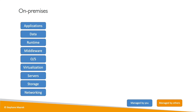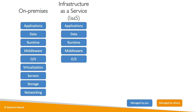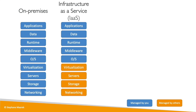With IaaS — Infrastructure as a Service — we're going to manage the application, the data, the runtime, the middleware, and the OS. But all the virtualization, servers, storage, and networking are going to be managed by others — in our case, AWS.